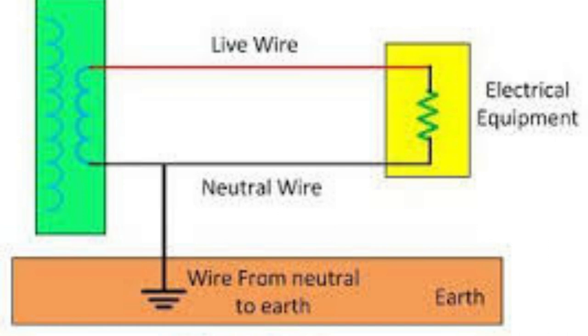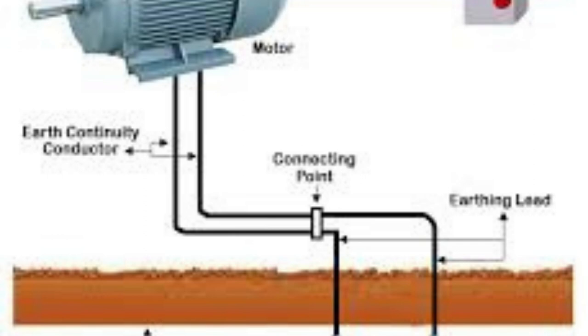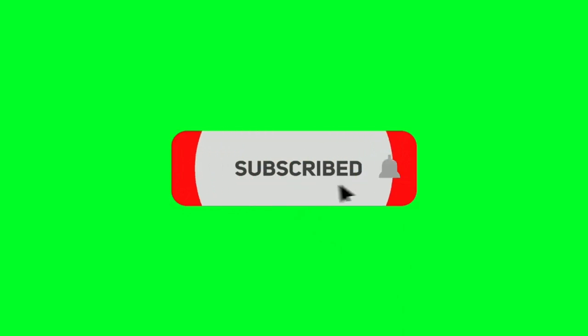Nine, the unbalanced load caused by a defect is balanced by grounding. To reduce the risk of electrical shock, earthing is used. Ten, earthing is a preventative strategy, and grounding provides a backup method.